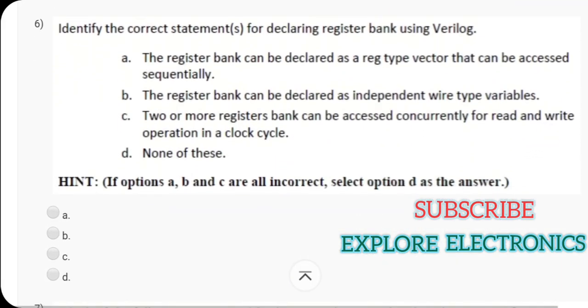And then question 6, identify the correct statement or statements for declaring register bank using Verilog. Here they have given three statements. Out of these the third option, two or more register banks can be accessed concurrently for read and write operation in a clock cycle. That is correct.